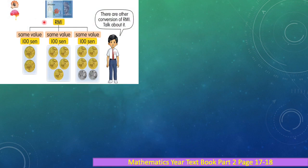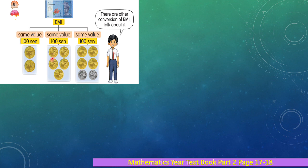Now, conversion from one ringgit to a combination of coins. One ringgit is the same value as five 20 cent coins: 20 cents, 40 cents, 60 cents, 80 cents, one hundred cents. One hundred cents is the same value as one ringgit.